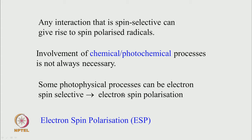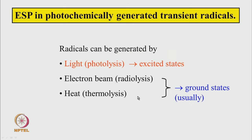It turned out that any interaction which is spin-selective can give rise to spin-polarized radicals. The involvement of chemical or photochemical processes is not always necessary — some photophysical processes can also be electron spin selective and give rise to spin polarization. So the new term coined is electron spin polarization (ESP). Today we are going to learn how this electron spin polarization arises in photochemically generated transient radicals.